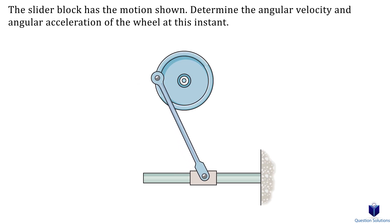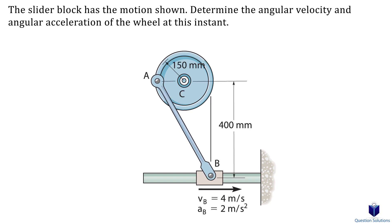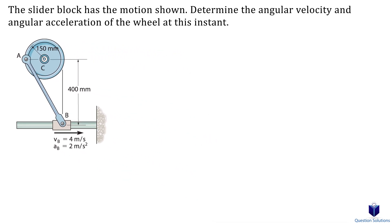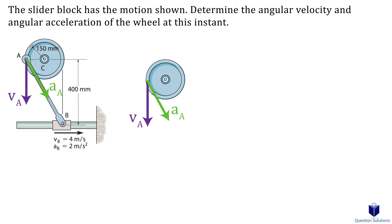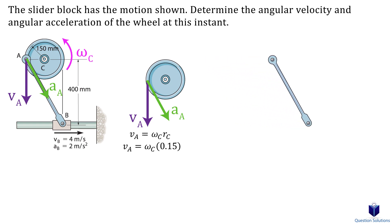Let's look at this example involving a wheel and a slider where we need to find the angular velocity and angular acceleration of the wheel. Let's focus on the wheel and draw a free body diagram. The velocity vector must be straight down at point A since that's where the link is connected, and we assume the acceleration vector at A points towards slot B. For velocity at point A, we write an equation: angular velocity of the wheel multiplied by the distance from center to point A. Drawing a free body diagram for link AB, the velocity at B must be straight to the right since the slider is locked onto a bar.